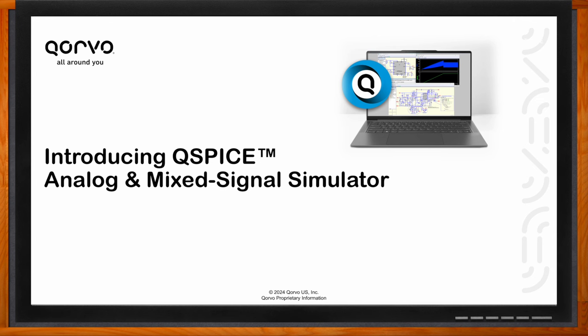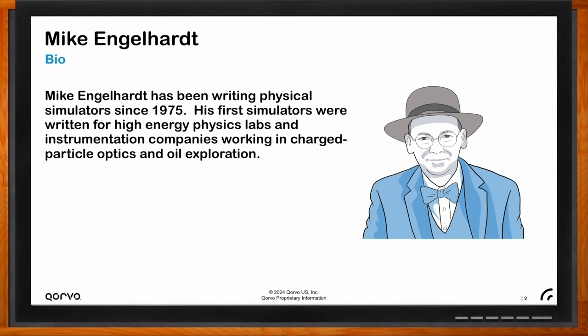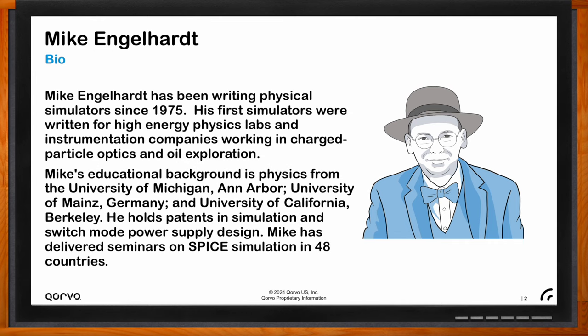Hi Mike, thank you so much for joining us. Q-Spice started out as a personal mission to get SPICE right. SPICE is a difficult code — even if you're from UC Berkeley and have had someone from the original Berkeley CAD group explain it to you, it's still a difficult code and it was written a long time ago. With Q-Spice, I wanted to implement a modern SPICE simulator that applies the improvements currently available on computer hardware and advances in numerical methods.